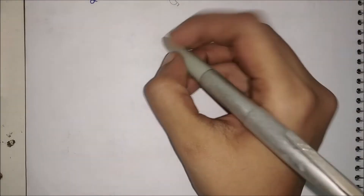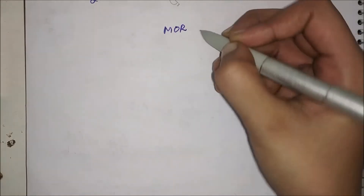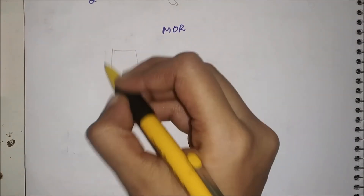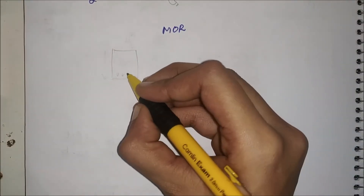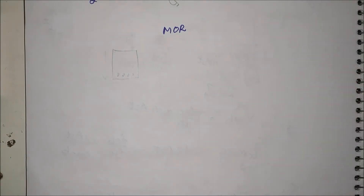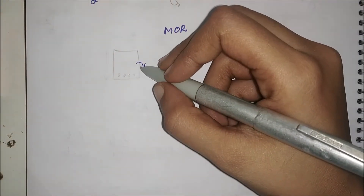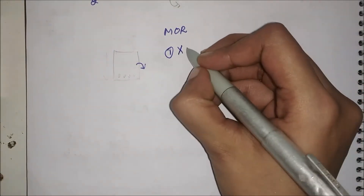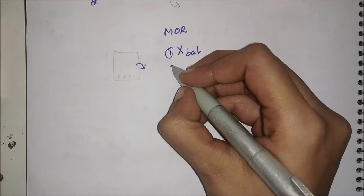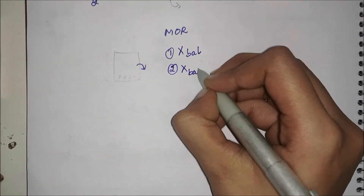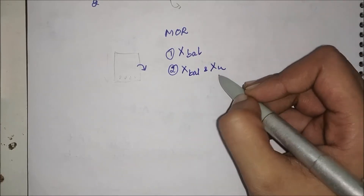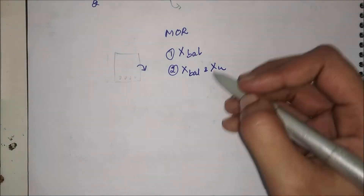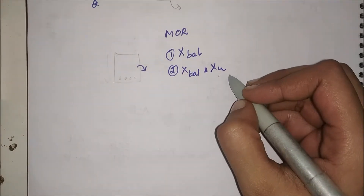In this video let us see how to find the maximum moment of resistance, which is called MOR. They'll give you a section with its dimensions and the A_st values, and from this you have to find how much moment the section can carry. To find it, first you find x_balance, second you find x_u, and third you compare x_balance and x_u.